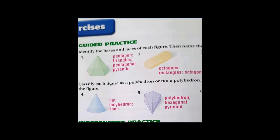Here we need to identify the name of the base and the face for each figure, and then name the figure. The base here — let's count how many sides: one, two, three, four, five — five sides means it's a pentagon. All the faces are triangles, so it will be a pentagonal pyramid, because a pyramid has only one base and all the faces are triangles.